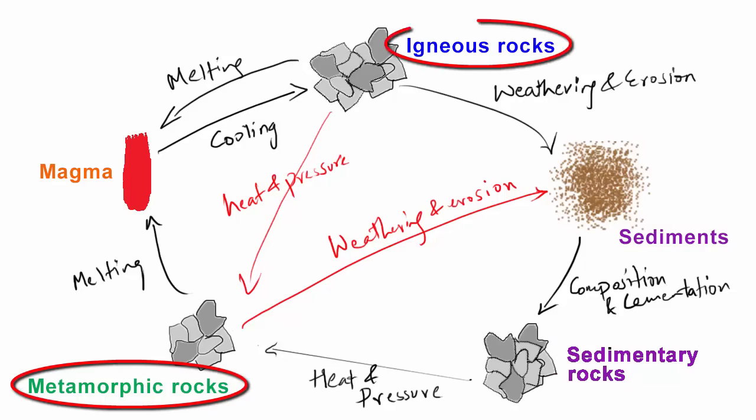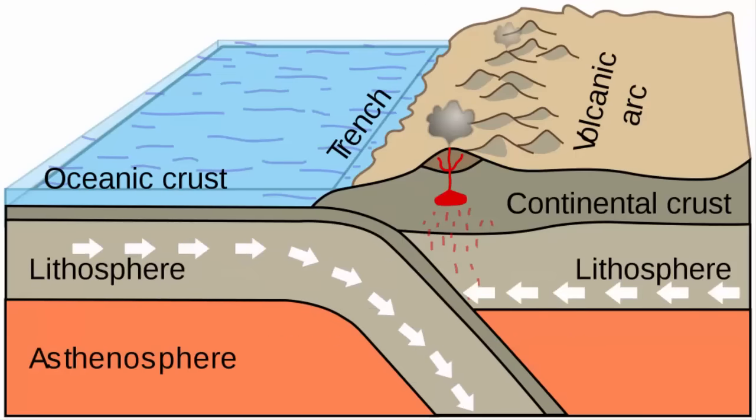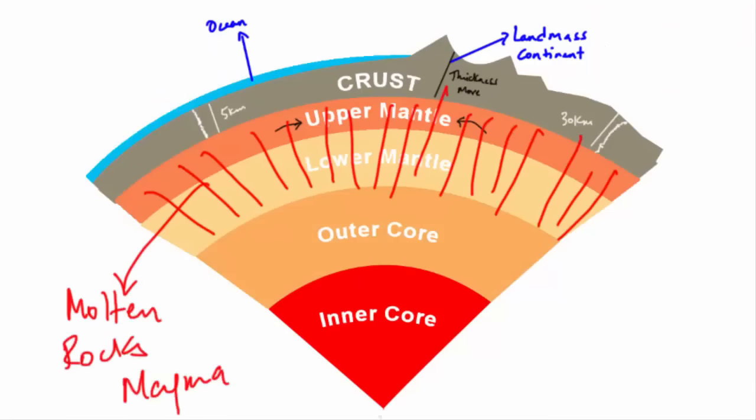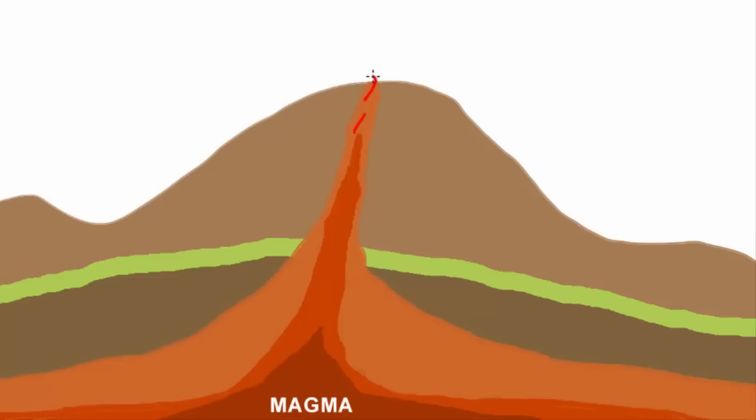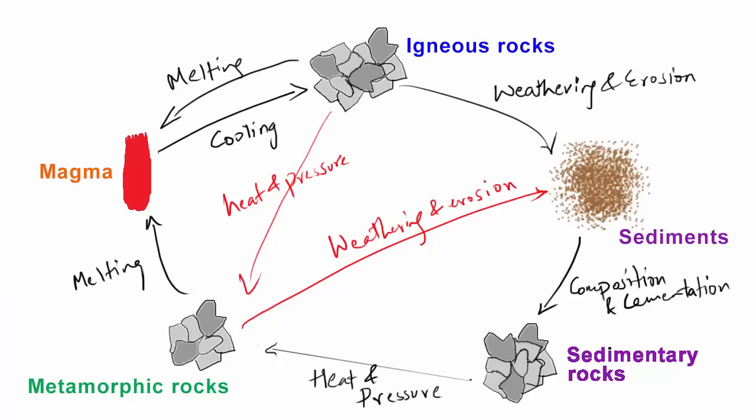Metamorphic and igneous rocks find their way into the mantle through subduction. It happens when two plates converge and then one plate goes under another. This way all these metamorphic and igneous rocks find their way into the mantle. And we know mantle consists of molten rocks called magma. And again magma comes out on the surface through volcanic activity and that's how you find the sources of igneous rocks. So this is the rock cycle.